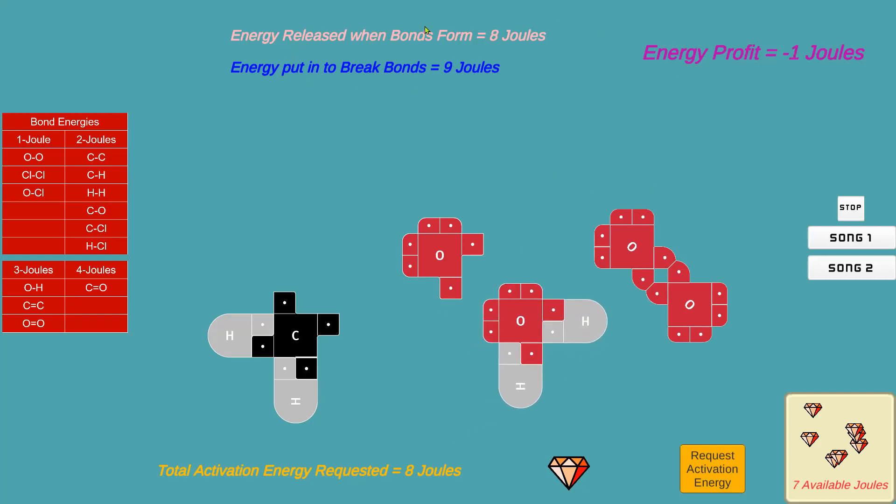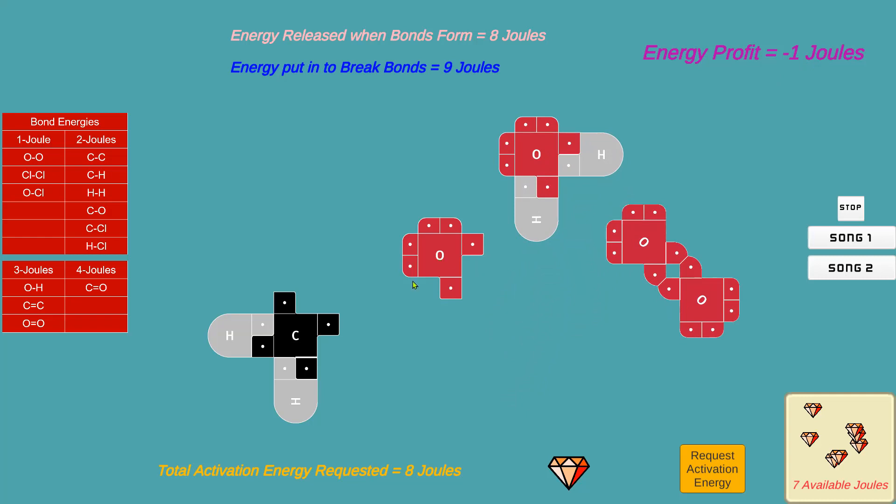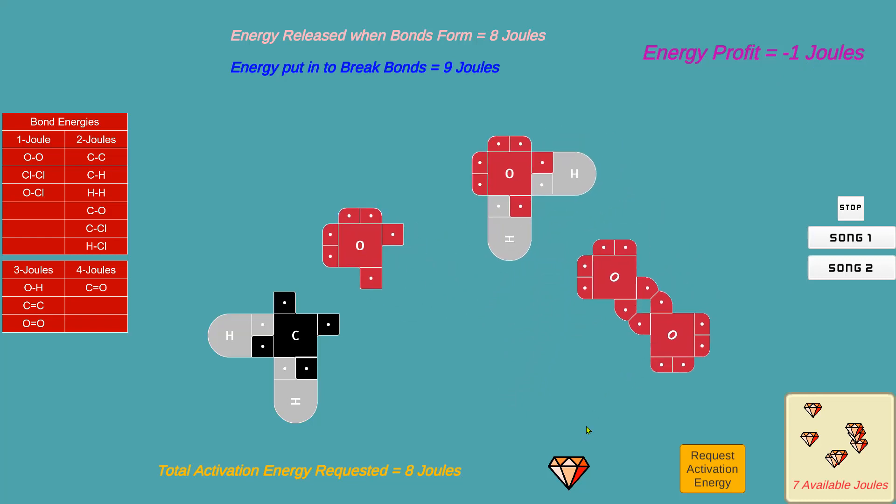Up at the top here, it keeps track of the energy released when bonds form and the energy that you put in to break the bonds, and there's an overall profit or loss up here. If it's negative, it's a loss. I haven't gained any energy by doing these reactions yet. But I'm not done until I get to CO2 and H2O.